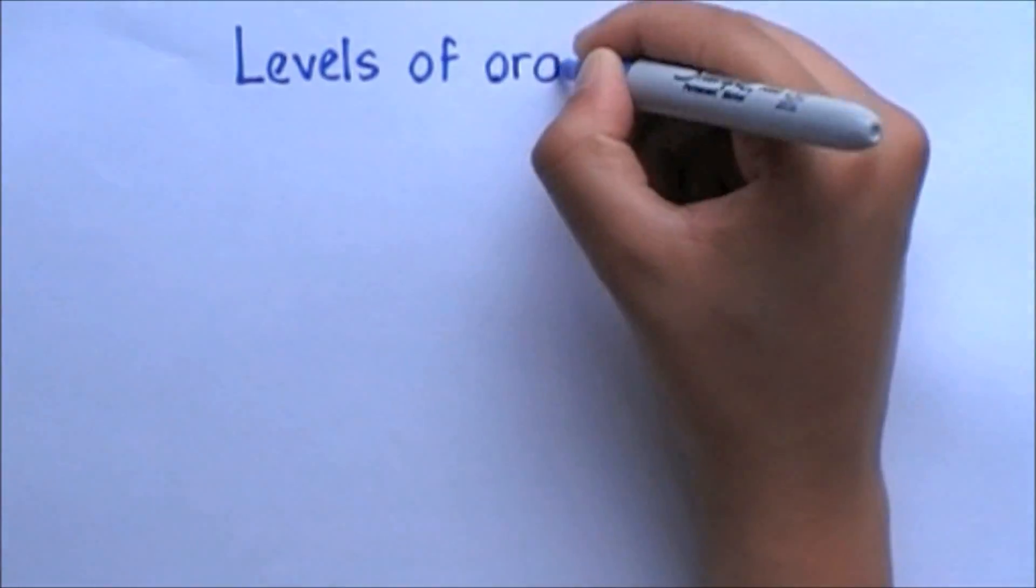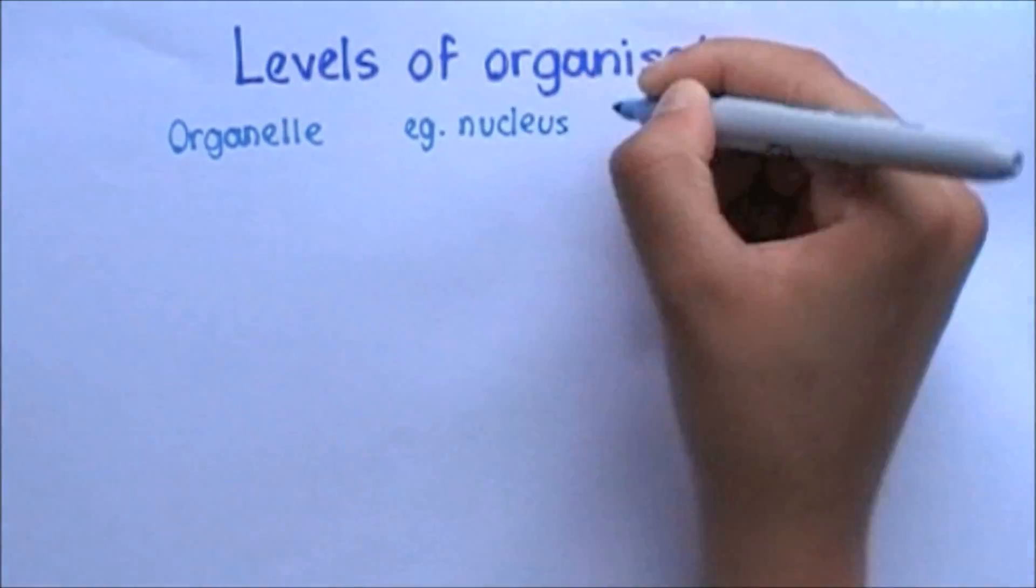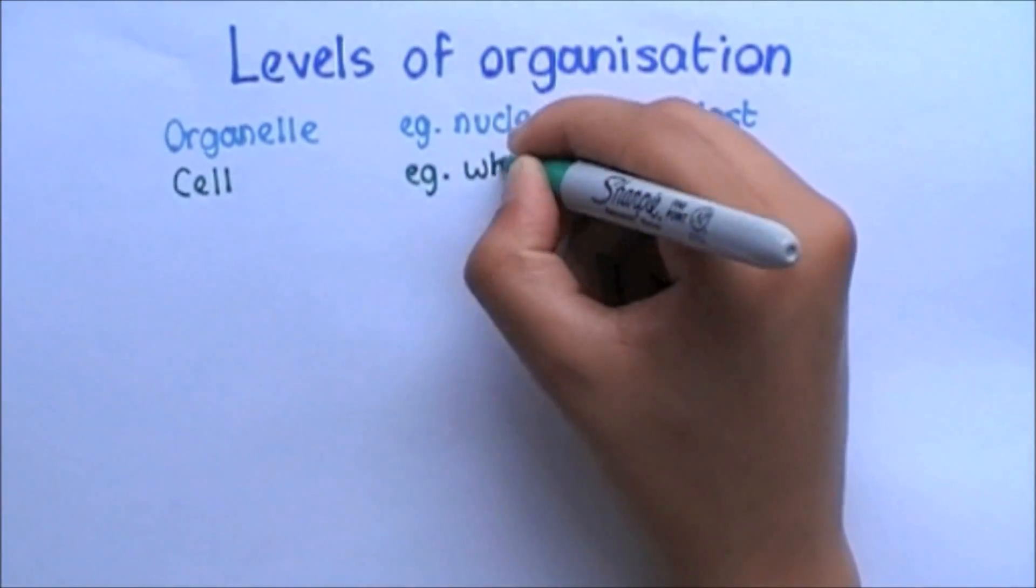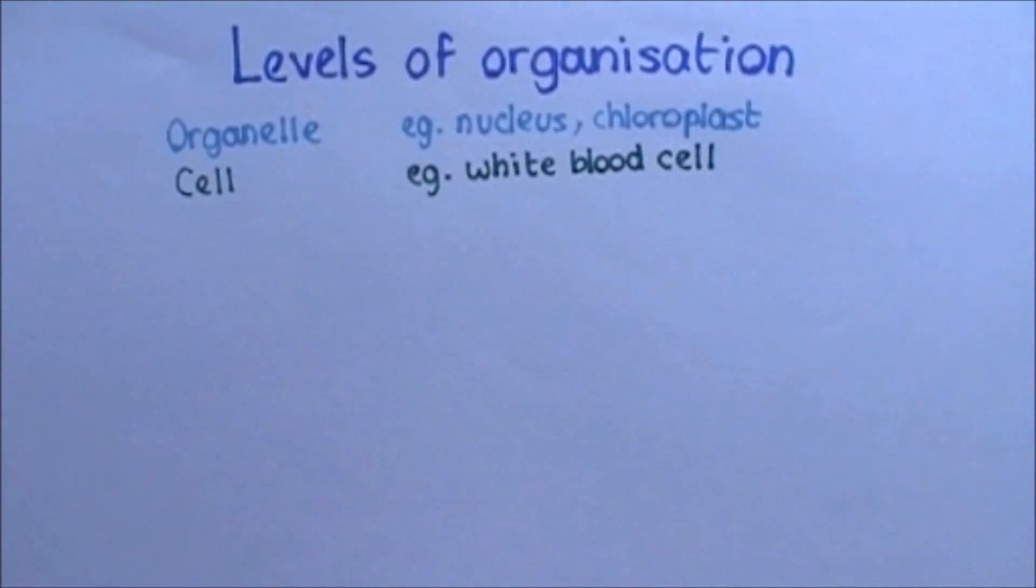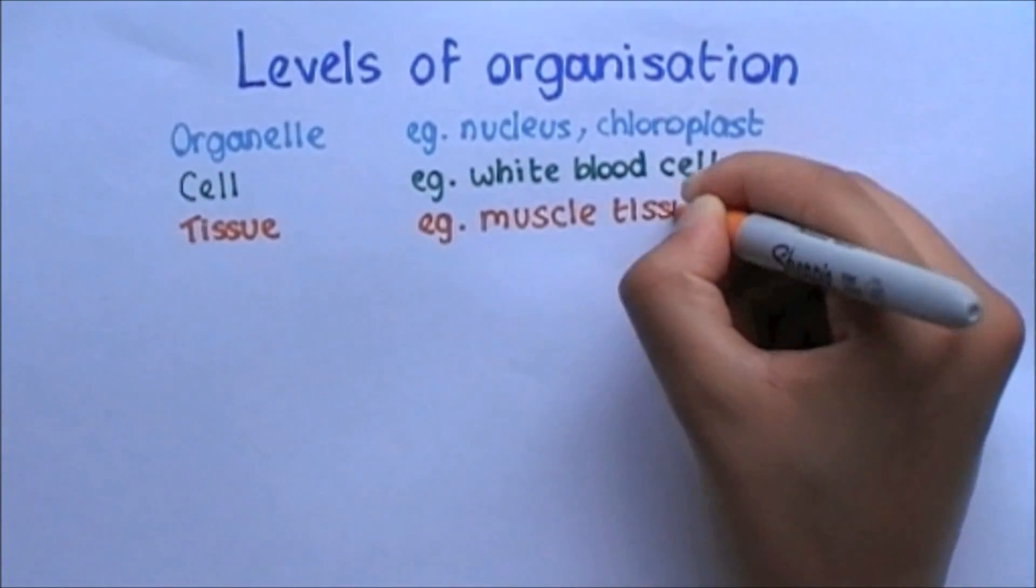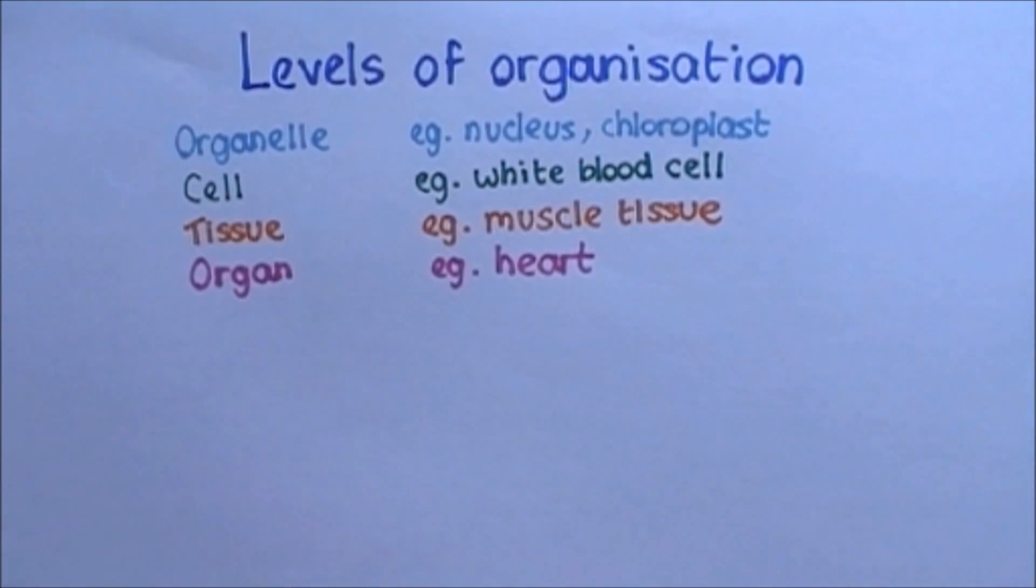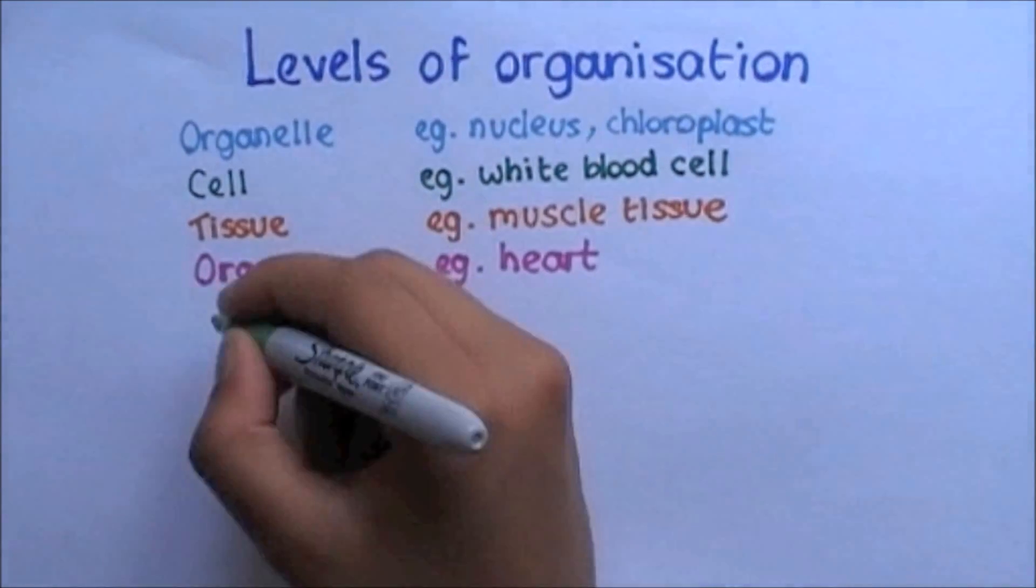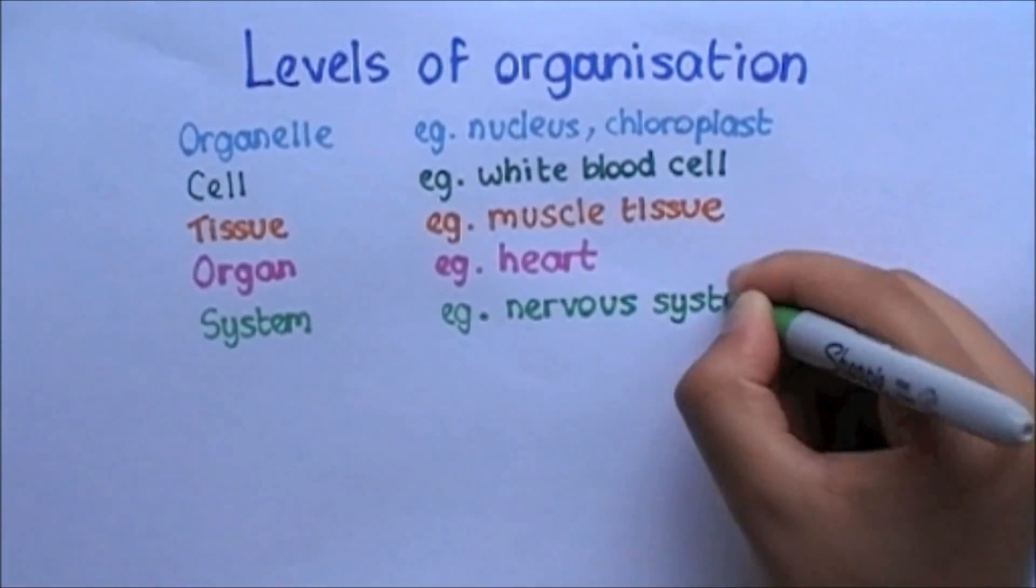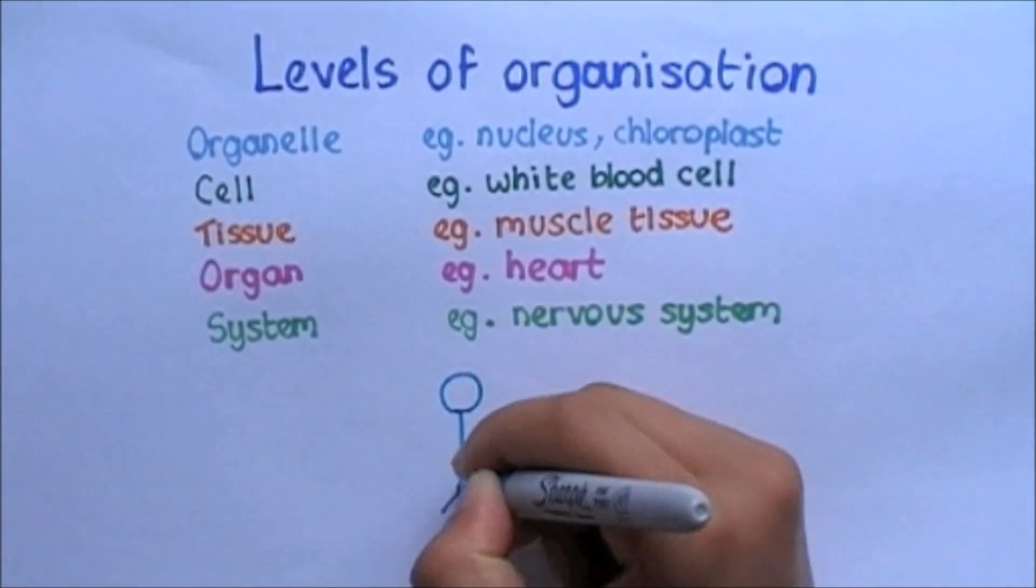With specialized cells come the levels of organization. Starting from smallest and working our way up, we first have an organelle, such as a nucleus or chloroplast. The next step up is a cell, such as a white blood cell. Then we have a tissue, which is a group of similar cells working to perform a common function, such as muscle tissue. Next is an organ, which is a variety of tissues working together to perform a common function, such as the heart. This is when we build our system, which is a group of organs working together to perform a common function, such as the nervous system. Then these systems work together to create the body.